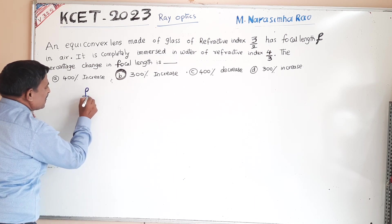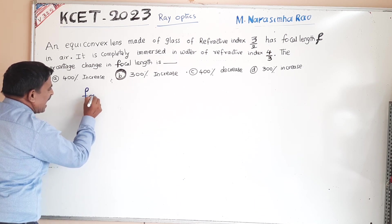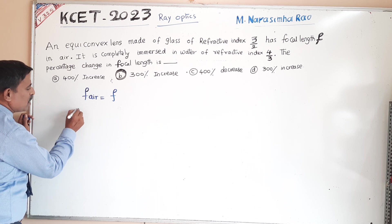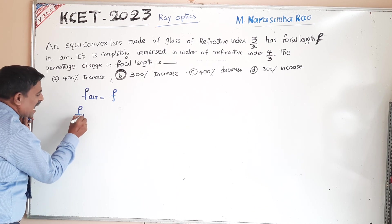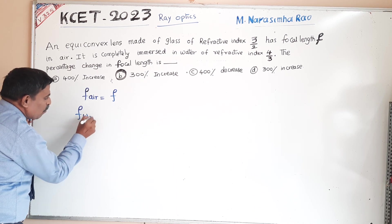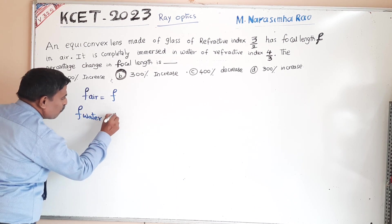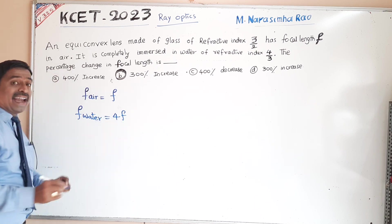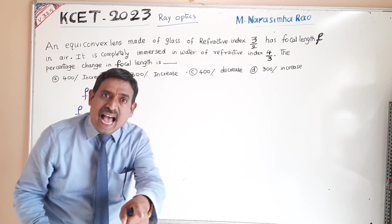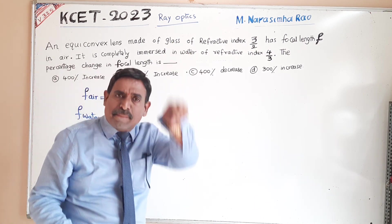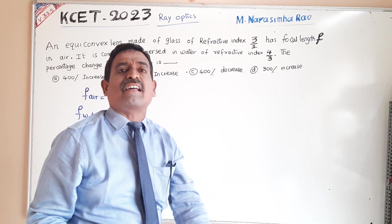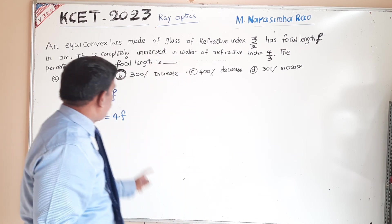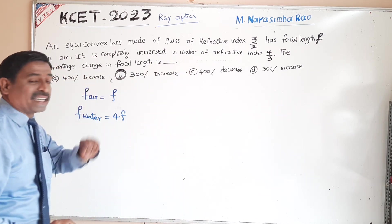Focal length in air is given as f. Focal length in water is 4f. When a lens made of glass is immersed inside water, its focal length becomes 4 times.